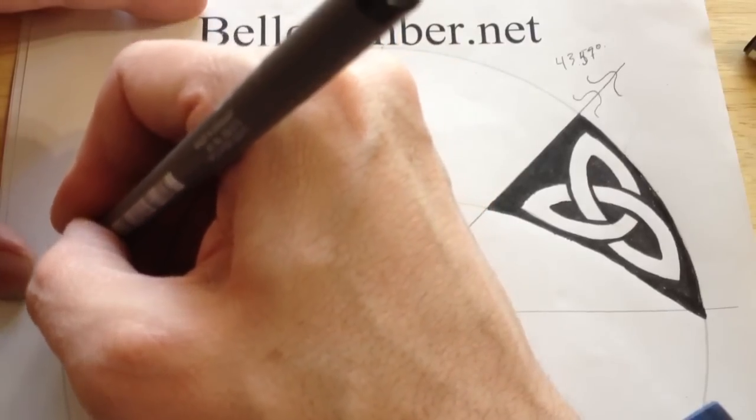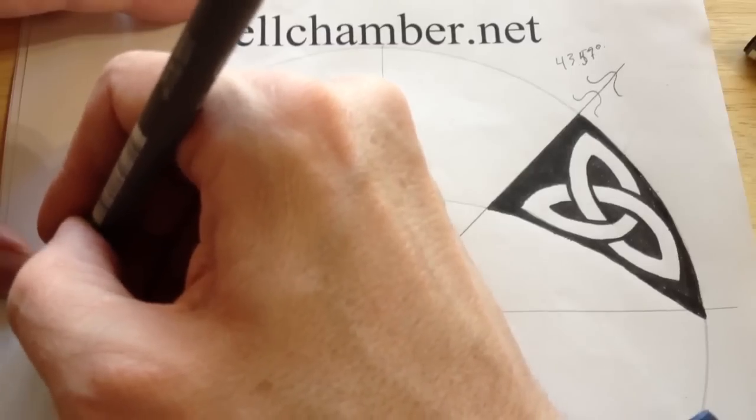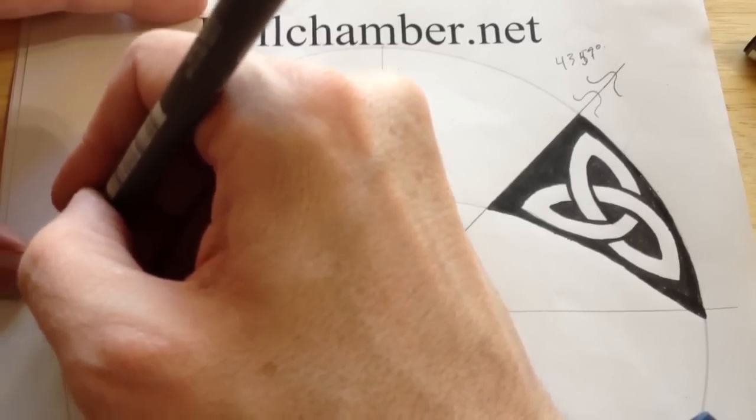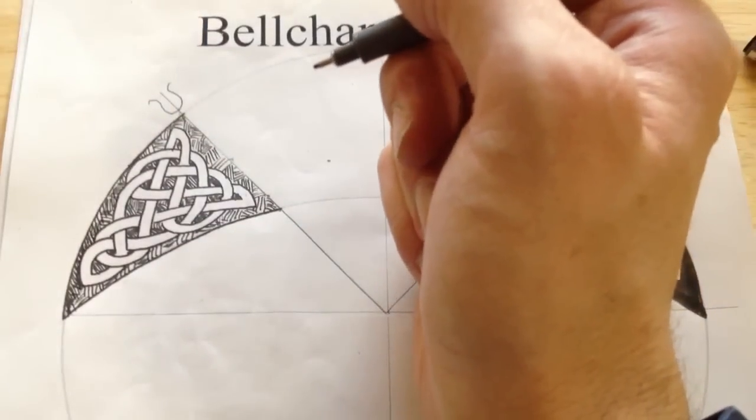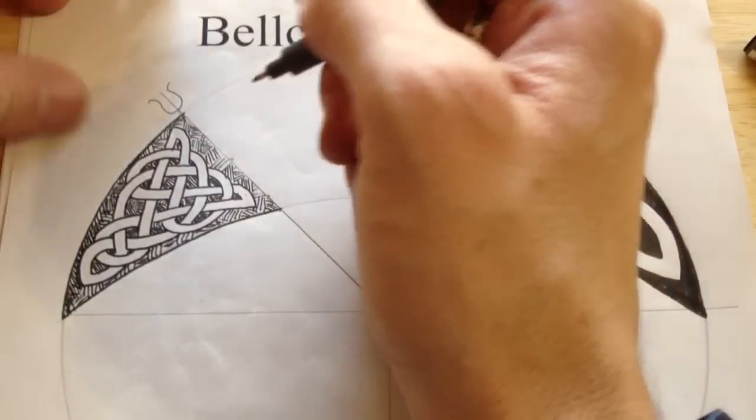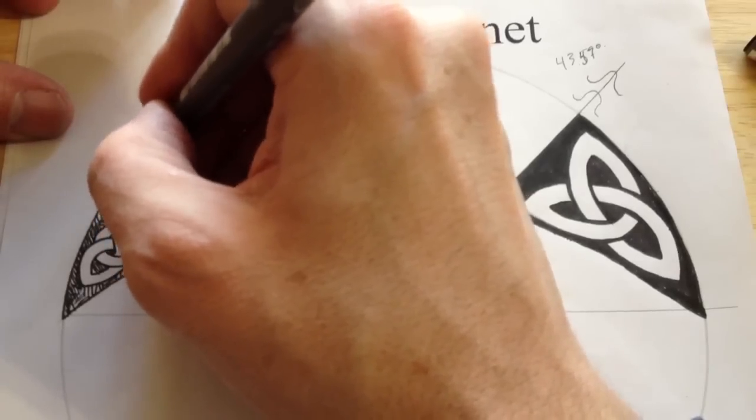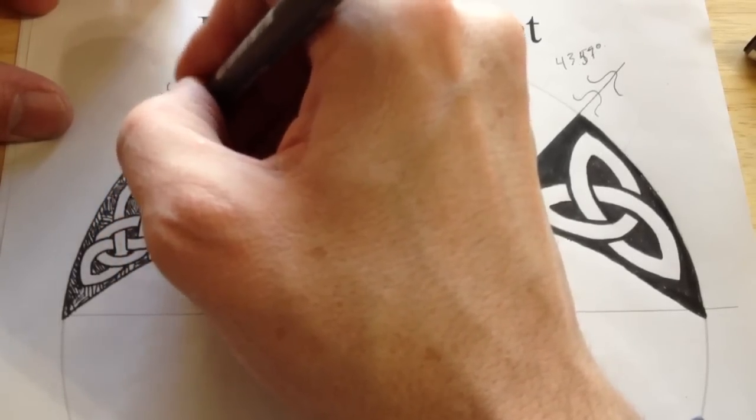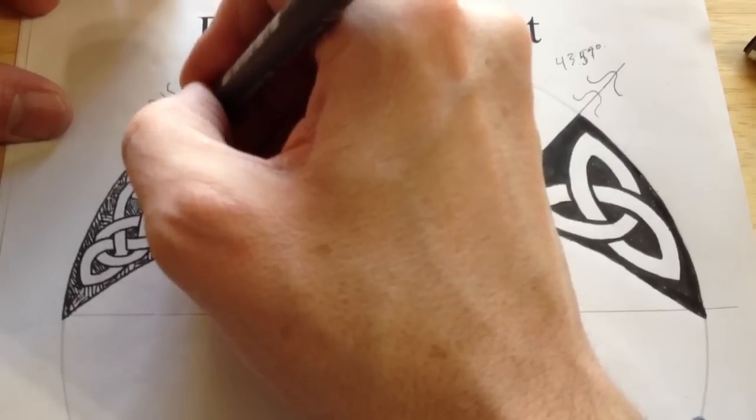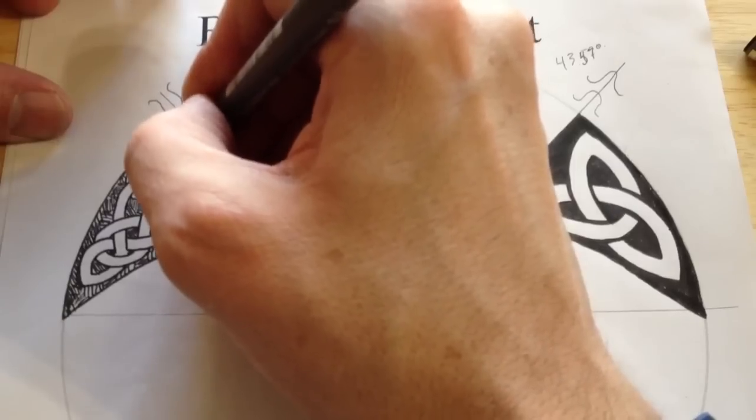Don't be afraid to make mistakes because you can just draw it over. There, I'm liking that. Next I'm going to fill in the background around the ribbon. Not quite filling up the negative space yet. But in between the knots and the interlace, I'm going to make that solid.